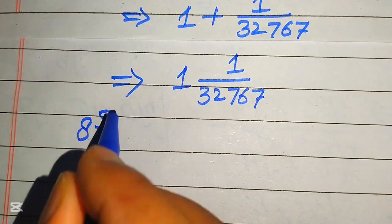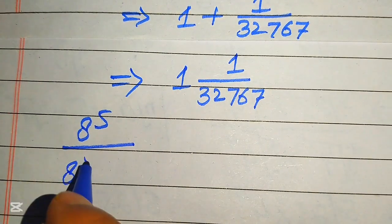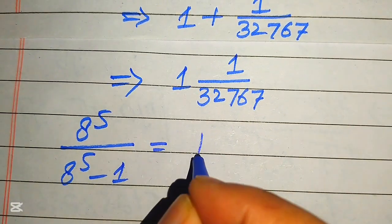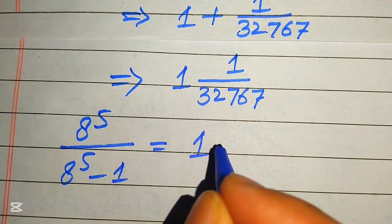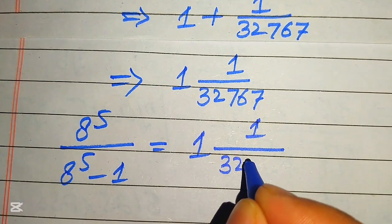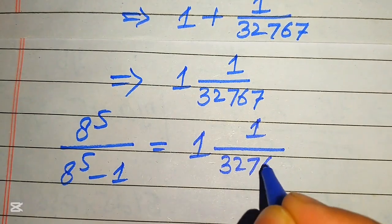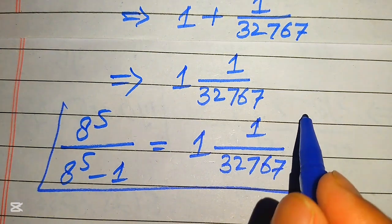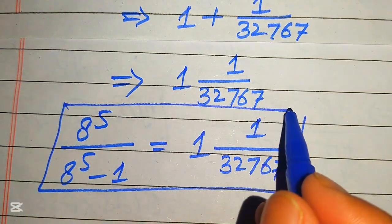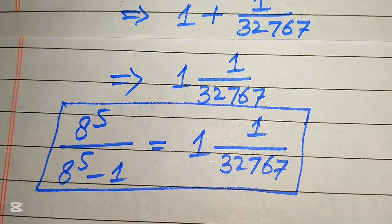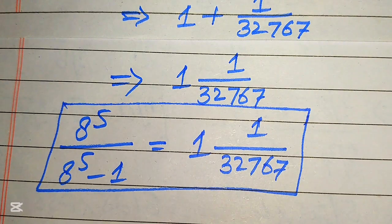So the final simplified form of 8^5 divided by 8^5 minus 1 equals 1 and 1 over 32,767. This is our final answer. Thank you so much for watching — please subscribe to the channel for more exciting videos.